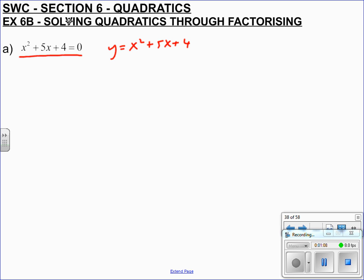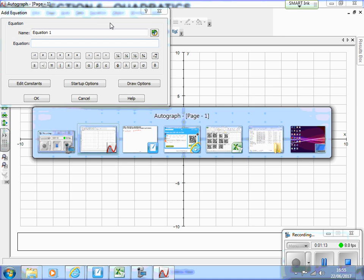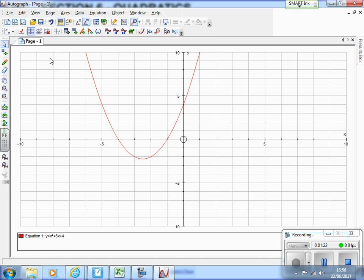So if we put the graph in to Autograph, you can see we have y equals x squared plus 5x plus 4. You can see here that it crosses at two points. It crosses here and here, so it looks like x is minus 1 and it looks like x is minus 4.